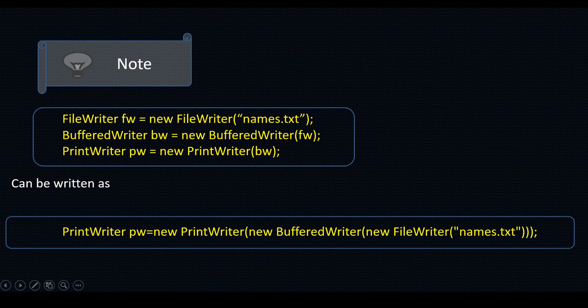Now you can write all three lines in a program like this: FileWriter FW = new FileWriter("names.txt"); BufferedWriter BW = new BufferedWriter(FW); PrintWriter PW = new PrintWriter(BW). The same thing can also be written in a single line using nested constructors: PrintWriter PW = new PrintWriter(new BufferedWriter(new FileWriter("names.txt"))). So instead of writing three lines you can write it in one line.